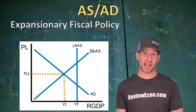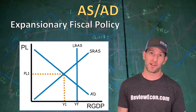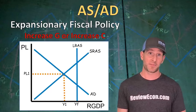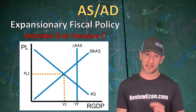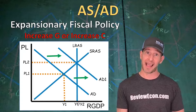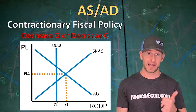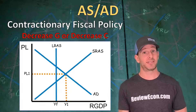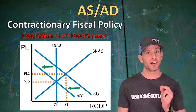The government can use fiscal policy to close output gaps more quickly. For a recessionary gap, expansionary fiscal policy — increasing government purchases or increasing consumption — shifts aggregate demand right, restoring full employment at a higher price level. For an inflationary gap, the government could increase taxes or decrease government purchases, shifting AD left and restoring full employment output.